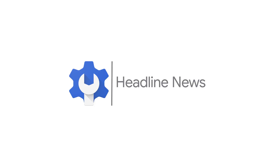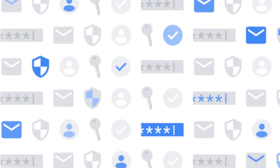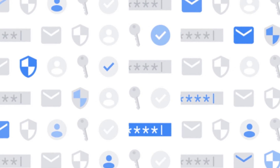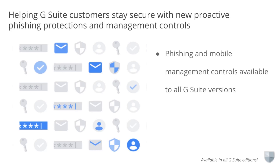Here's the headline news from the month of March. Security tools are only effective at stopping threats if they're deployed and managed at scale. But getting everyone in your organization to adopt these tools ultimately hinges on how easy they are to use. It's for this reason that G Suite has always aimed to give admins simpler ways to manage access, control devices, ensure compliance, and keep data secure. To deepen and expand Google Cloud's customers' controls over their security, we're making phishing and mobile management controls available to all G Suite versions.